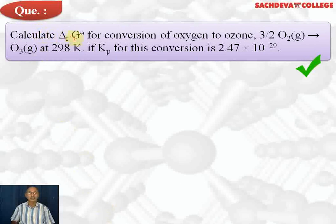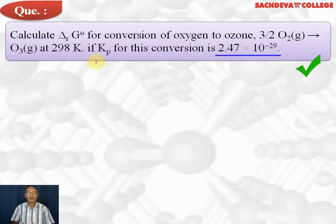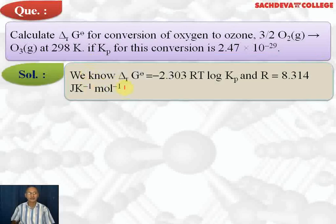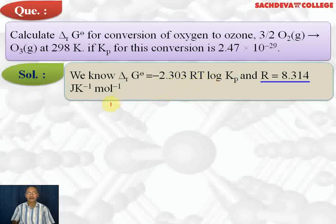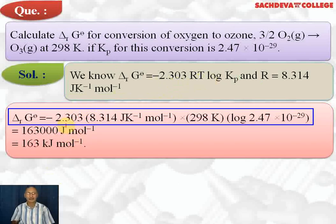Next question: calculate the delta G of reaction for conversion of oxygen to ozone — 3O₂ gas changes to 2O₃ — at 298 K, given Kp = 2.47 × 10⁻²⁹. The formula is: delta G = minus 2.303 RT log Kp, where R = 8.314 joules per kelvin per mole.